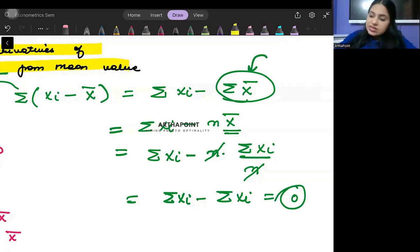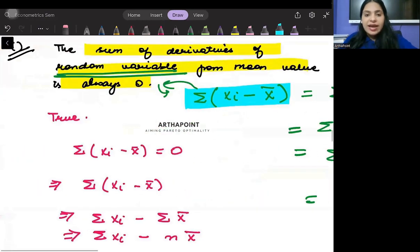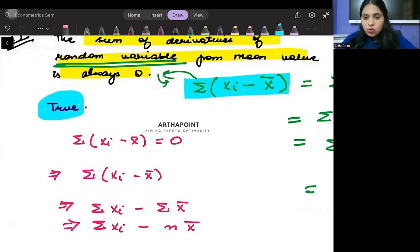So if I were to find the sum of the deviation from mean, we see that this will come out as zero, and therefore yes, it is true that it will always be zero.